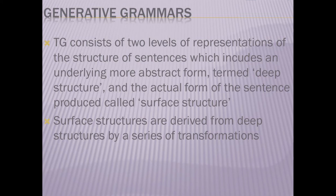TG consists of two levels of representation of the structure of sentences: an underlying, more abstract form termed deep structure, and the actual form of the sentence produced, called surface structure. Surface structures are derived from deep structures by a series of transformations.